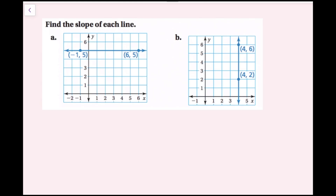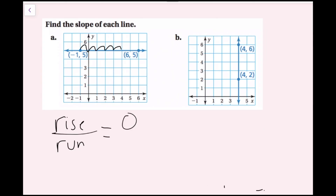Find the slope of each line. For the first one I'll do rise over run. There is no rise — I'm not going up or down at all — so my rise, or change in y, is zero. For the run, counting the spaces from negative one to six, that's seven spaces. So my run is seven. This is zero divided by seven, and zero divided by seven is just zero. The slope of this line is zero. Notice this is a horizontal line — the slope of every single horizontal line is going to be zero.